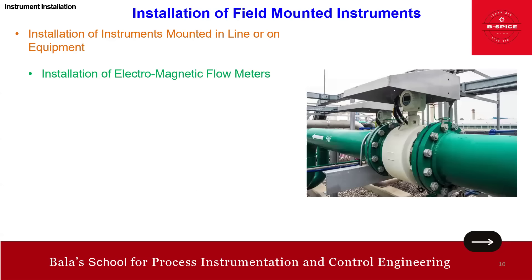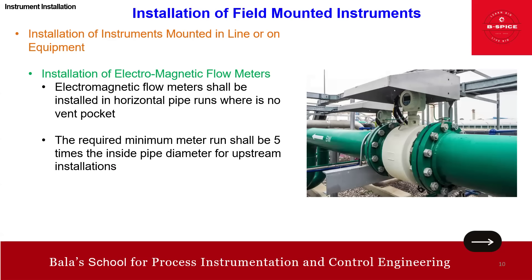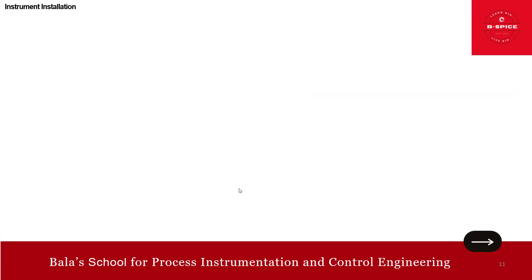For the electromagnetic flow meter: it shall be installed in horizontal pipe where there is no air pocket. The required minimum meter run shall be 5 times the inside pipe diameter — 5D — for upstream installation. Some vendors are offering versions even without upstream and downstream straight run requirements, so you can check with the vendor as well.